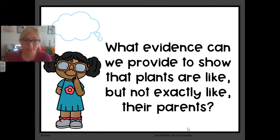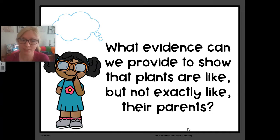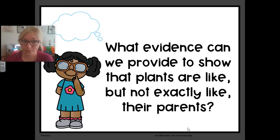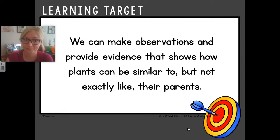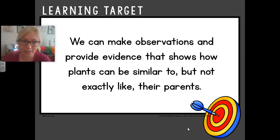First we're going to think about what evidence we can provide to show that plants are alike but not exactly like their parents. Remember yesterday we looked at the photos of the lions and the penguins — they had a lot of similarities with each other but they didn't look exactly alike. Now today we're going to do that but instead with plants, a different type of living thing. Our learning target today is that we will be able to make observations and provide evidence that show how plants can be similar to but not exactly like their parents.